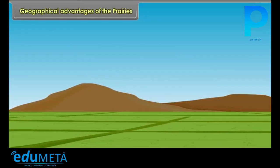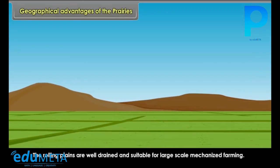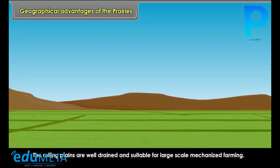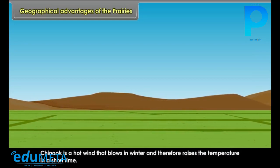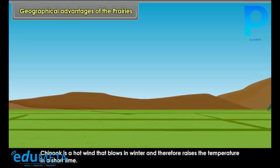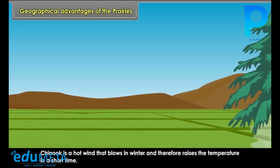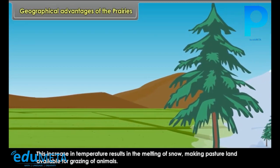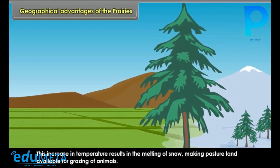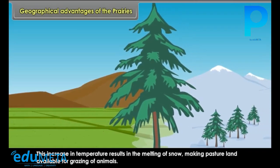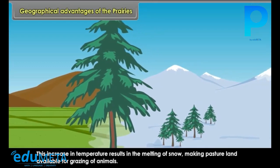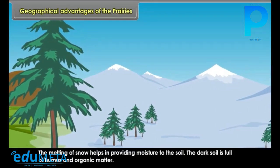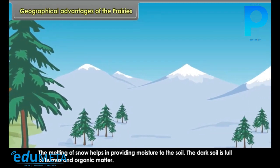Geographical Advantages of the Prairies: The rolling plains are well-drained and suitable for large-scale mechanized farming. Chinook is a hot wind that blows in winter and raises the temperature in a short time. This increase in temperature results in the melting of snow, making pasture land available for grazing of animals.